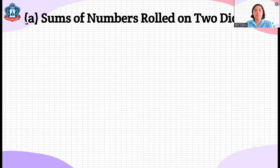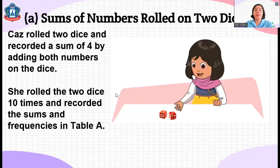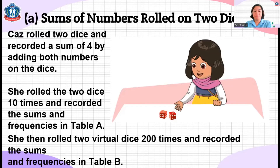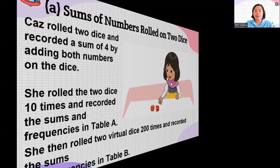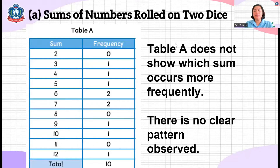Let's look at the sums of numbers rolled on two dice. Kaz rolled two dice and recorded the sum of four by adding both numbers. She rolled the two dice 10 times and recorded the sums and frequencies in Table A. In Table A, it does not really show which sum occurs more frequently — the frequencies are almost the same, with zeros, ones, and twos appearing, so there is no clear pattern because she only rolled it 10 times.